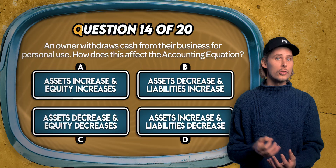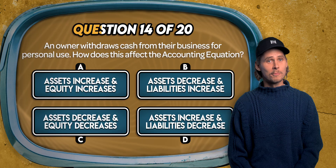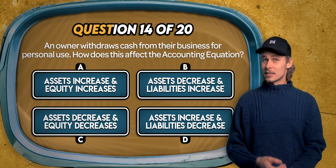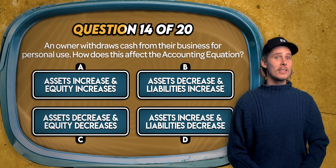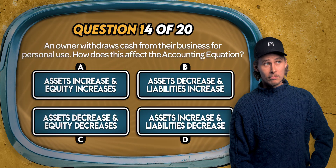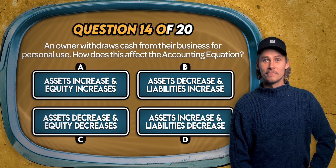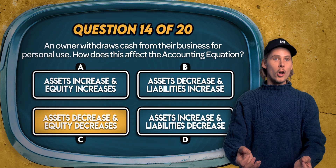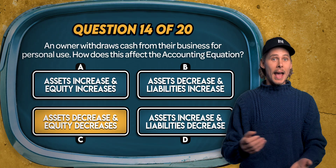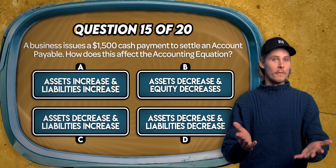Question 14. An owner withdraws cash from their business for personal use. How does this affect the accounting equation? Assets increase and equity increases? Assets decrease and liabilities increase? Assets decrease and equity decreases? Or assets increase and liabilities decrease? It's C. When the owner takes out cash, assets decrease and equity decreases because the owner's claim on the business's net assets is reduced.